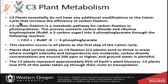C3 plant metabolism uses three-carbon intermediates to make glucose. These plants essentially do not have any additional modifications to the Calvin cycle that increase the efficiency of carbon fixation — this is the standard general evolutionary pathway that most plants have undergone. C3 carbon fixation converts carbon dioxide and ribulose bisphosphate into two 3-carbon 3-phosphoglycerate molecules. This reaction occurs in all plants and is the first step of the Calvin cycle, and for C3 plants it is the only pathway to create sugar.